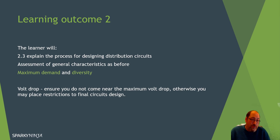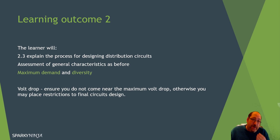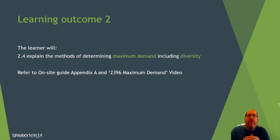So when designing distribution circuits we consider general characteristics, volt drop, and maximum demand and diversity. Outcome 2.4: the learner will explain the method of determining maximum demand including diversity — we're going to do a video on that showing the method.